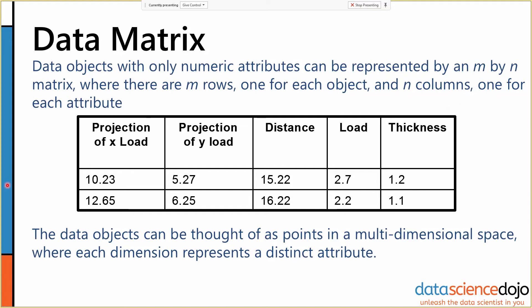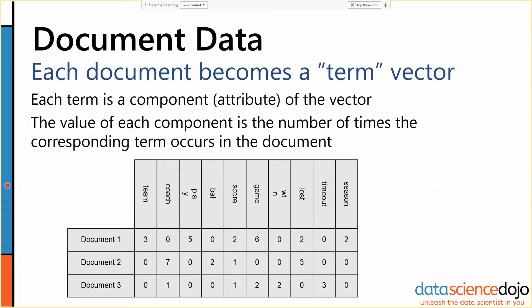Another useful subcategory of record data is document data. In this case, it's somewhat similar to a data matrix. Every term, every entry, every data attribute has a numeric value. But in this case, we've got counts, discrete values.